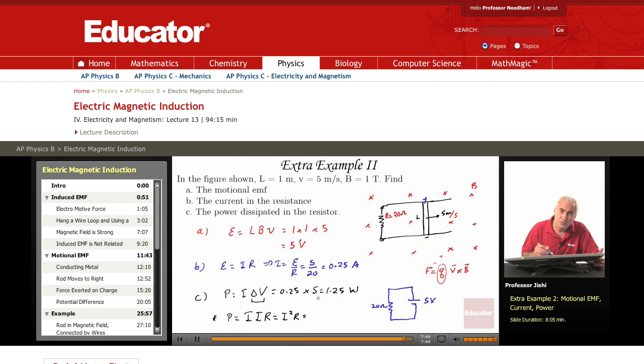So 0.25 is 1 over 4, so that's 1 over 4 squared times R, which is 20 ohms. So 1 over 4 squared is 1 over 16, so that's 20 over 16, which is 1.25 watts. So you can get it either way.